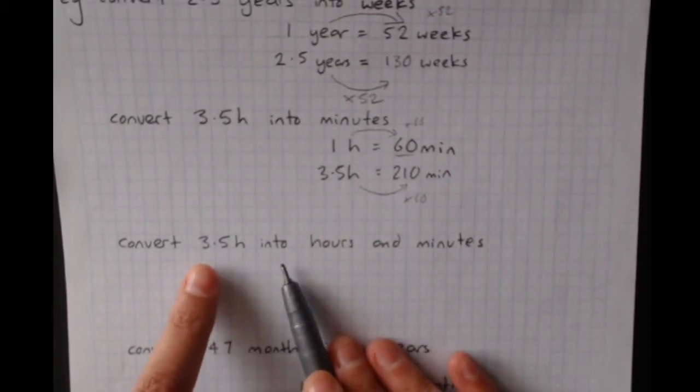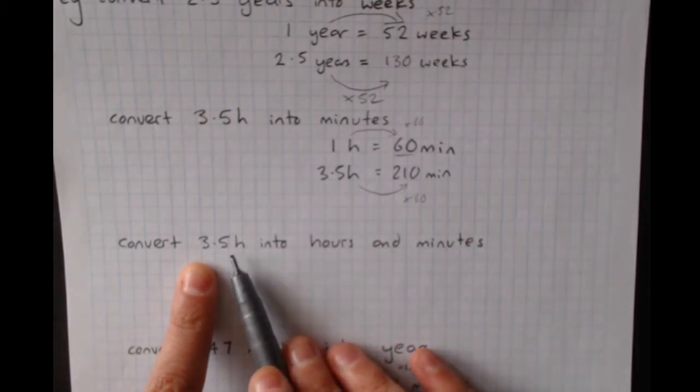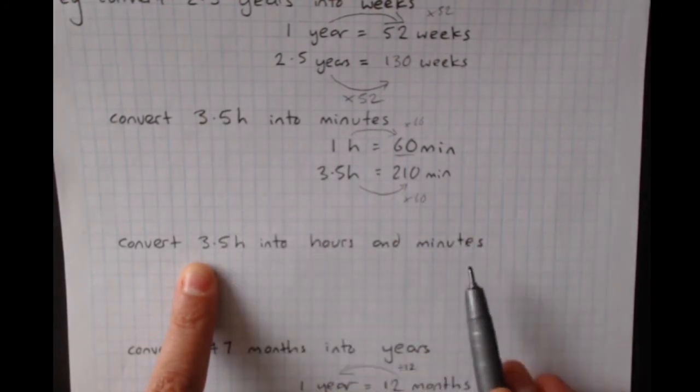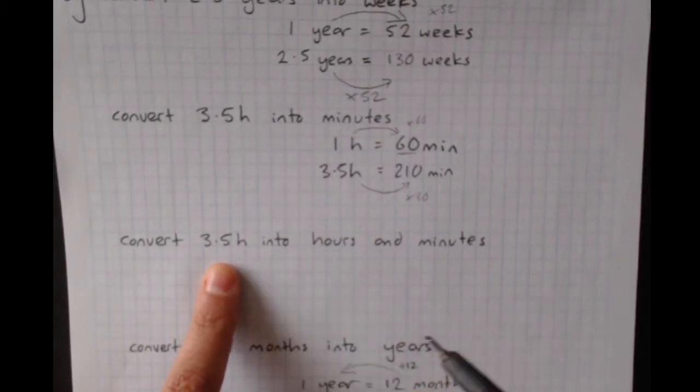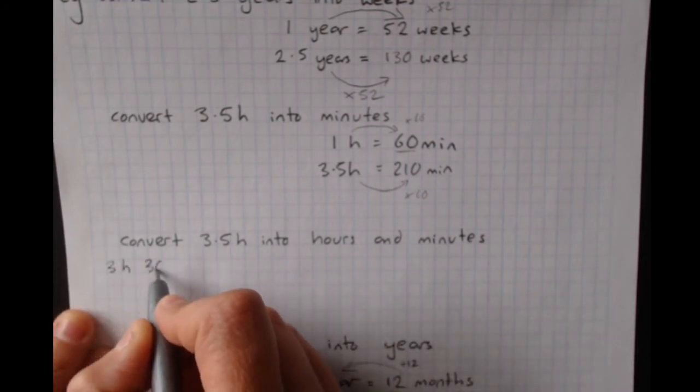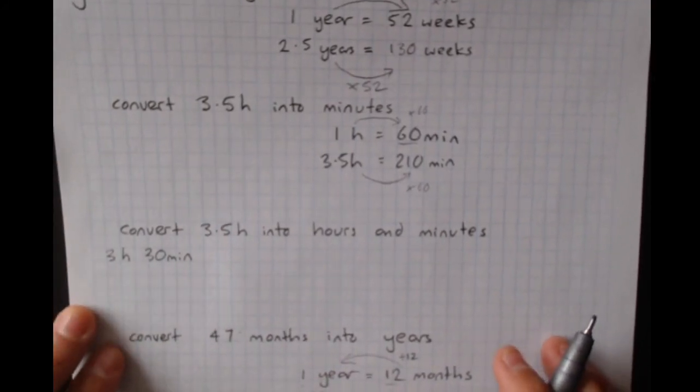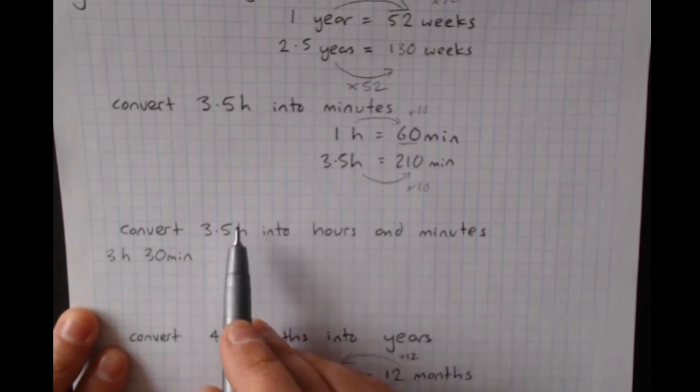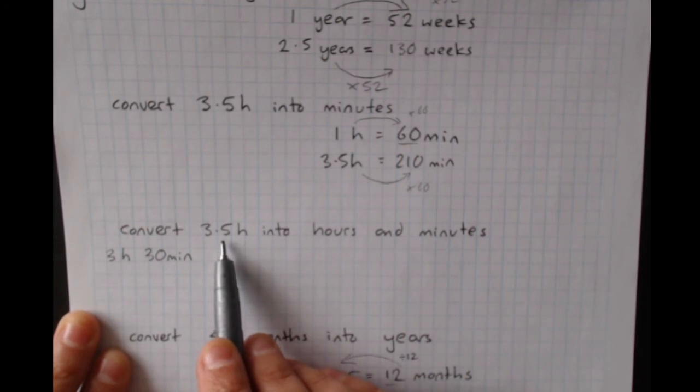Now, sometimes we've got a similar problem with time. We've got 3.5 hours here. And I might want that as hours and minutes. Now, I gave you a really easy one because half an hour, 0.5, is 30 minutes. So we could just answer this, 3 hours, 30 minutes. But the reason I gave us an easy one is so we can see how to do this. Because that 0.5 hours needs to be changed into minutes. The 3 hours we find, 0.5 into minutes.